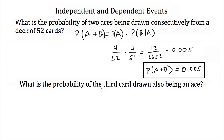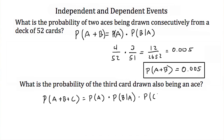So what is the probability of the third card also being an ace? We want the probability of A and B and C happening. That's equal to the probability of A, times the probability of B such that A has happened, times the probability of C such that B and A have happened. The probability of A — drawing our first ace — is 4 out of 52, and the probability of B given A is 3 out of 51.